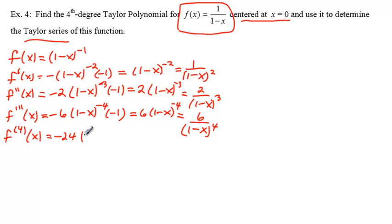times 1 minus x to the negative 5th power times the negative 1. The negative signs cancel, let me bring it down here, and we end up with writing it nicely this time. Since we don't need to take another derivative right now, we get 24 over 1 minus x to the 5th power.